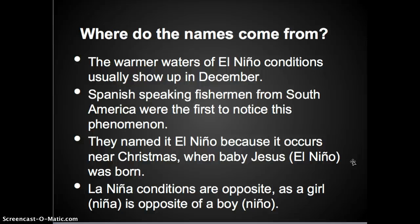So where do the names come from? The warmer waters of El Niño conditions usually show up in December. Spanish-speaking fishermen from South America were the first to notice this phenomenon. They named it El Niño because it occurs near Christmas time, when baby Jesus, called El Niño, was born. La Niña conditions are opposite — as a girl, Niña, is opposite of a boy, Niño.